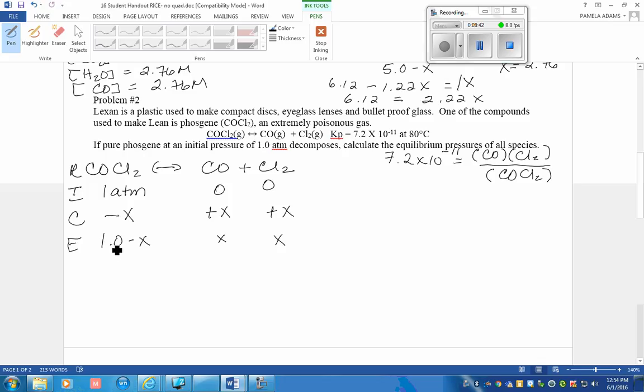So we can put this into our law of mass action. 7.2 times 10 to the negative 11 equals X times X over 1.0 minus X. Now I want to remind you that these are the equations that will give us the equilibrium pressures.